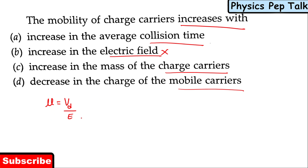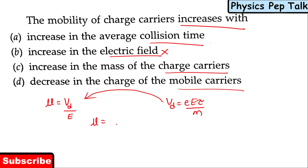From the previous question, we know that drift velocity Vd is equal to eEτ by m. I will substitute this in the mobility equation. So μ will be equal to Vd divided by E — substituting eEτ/m into E.